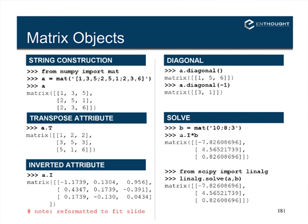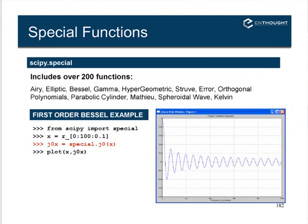The special functions library has a list of different functions. The most commonly used are the Hankel and Bessel functions and the Airy functions. Here we look at a Bessel function of zeroth order: we create an x array from 0 to 100 stepping by 0.1, call the Bessel function with that array returning J0, and plot it.